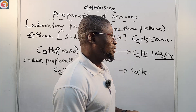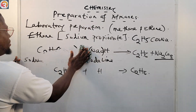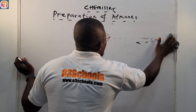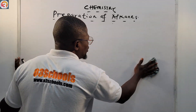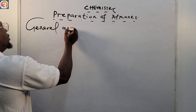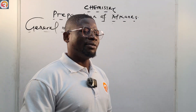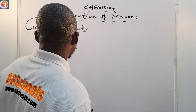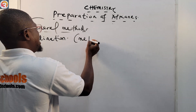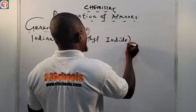Now let us see some other general methods we can use for preparing alkanes. One of them is called iodination. If you want to see all the reactions for these other methods, you can check them in your textbooks. General method number one is iodination.